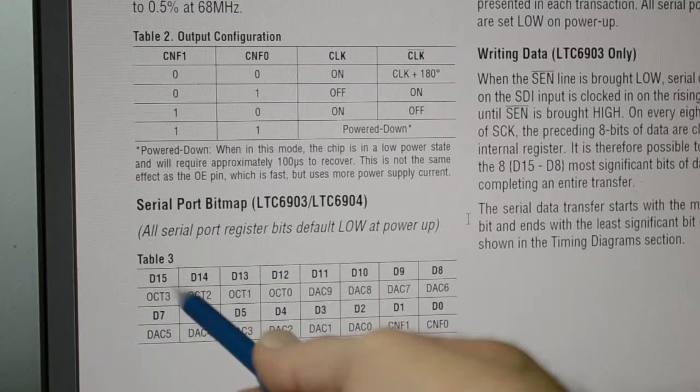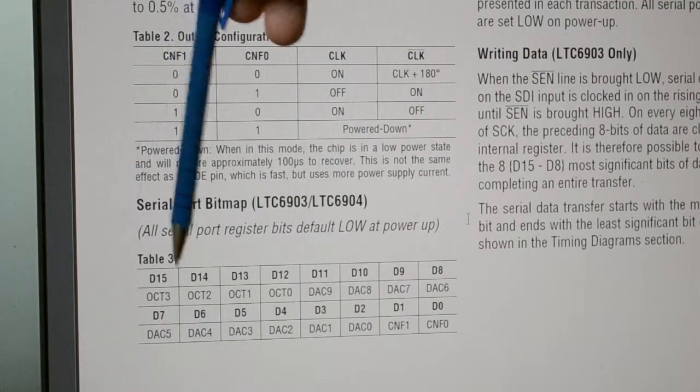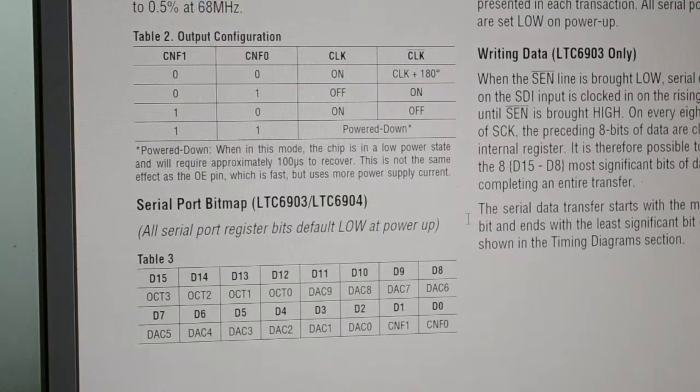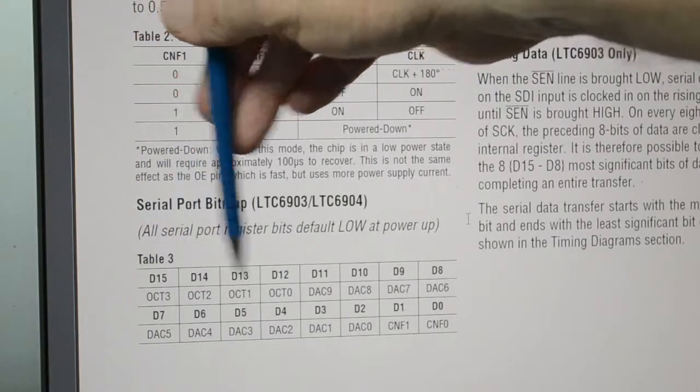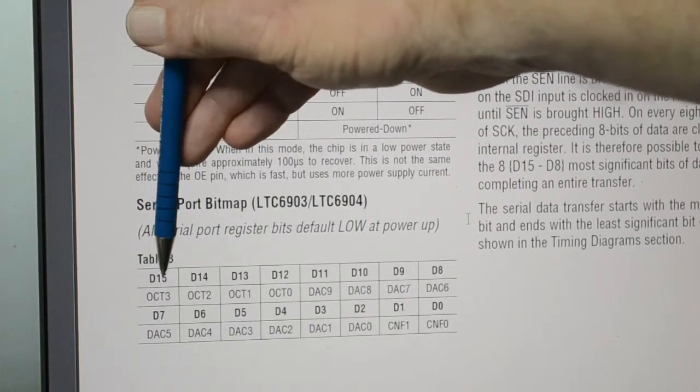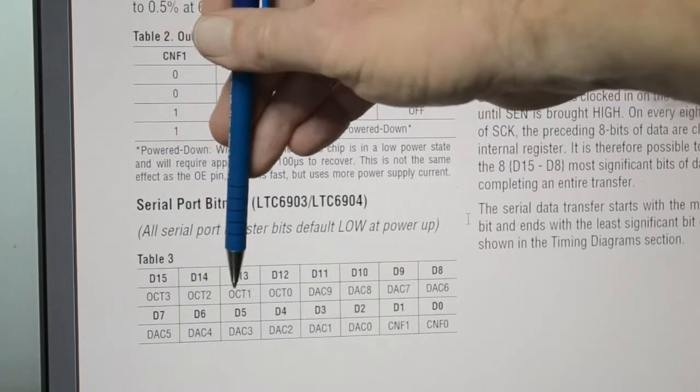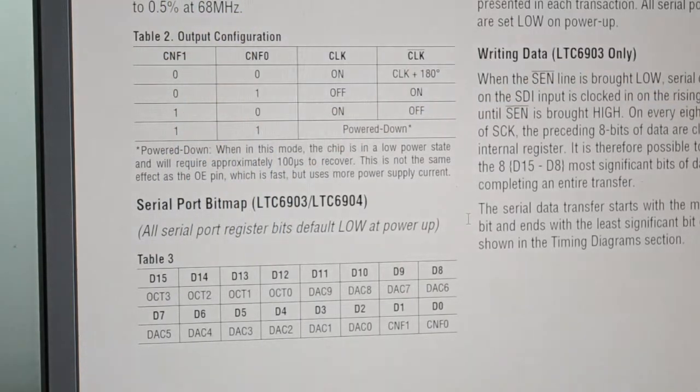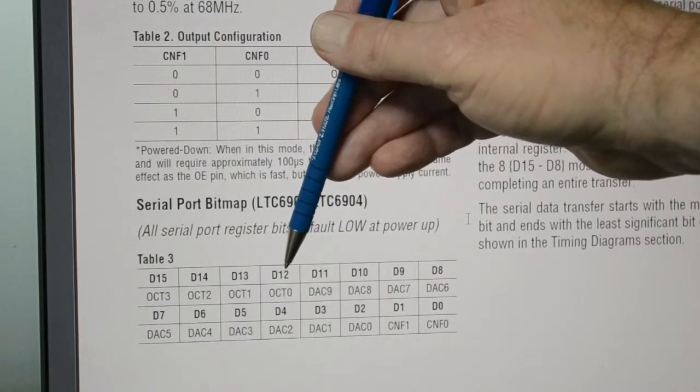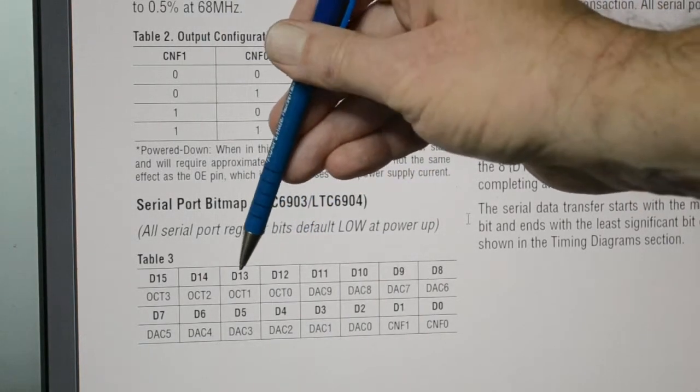But the important bit is this table down the bottom. So you see here, the most significant bits, which is what the oscillator looks for. So it's 16 bits, but remember 0 is a number, so we start from 15. So bit 15, octal 3, octal 2, octal 1, and octal 0. But this is hexadecimal, so this is 1, 2, 4, and 8.